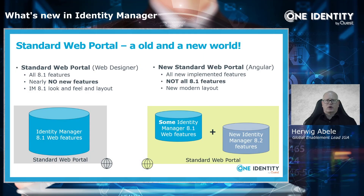Before we start, we should talk in general about both portals we have. There is the Web Designer portal — what we had in the past — and additionally, since 8.2, a new standard web portal. Both contain different feature sets. In the old world you will find all the features implemented in version 8.1 of the Identity Manager, plus one or two small new features backported into it. But the majority of new features implemented in Identity Manager 8.2 were only implemented into the new standard web portal as additional functionality.